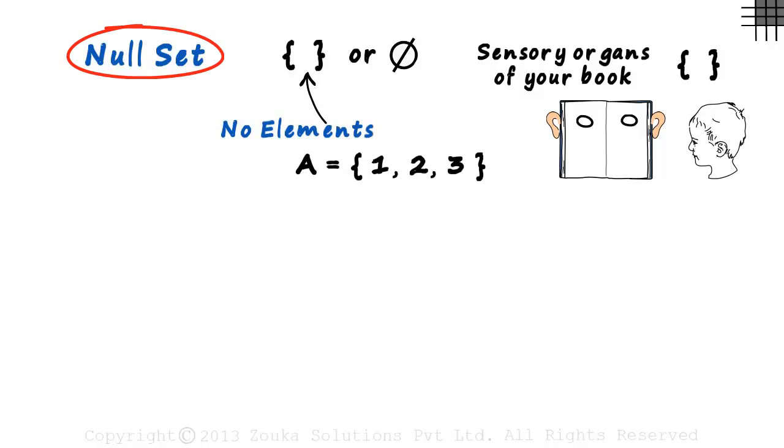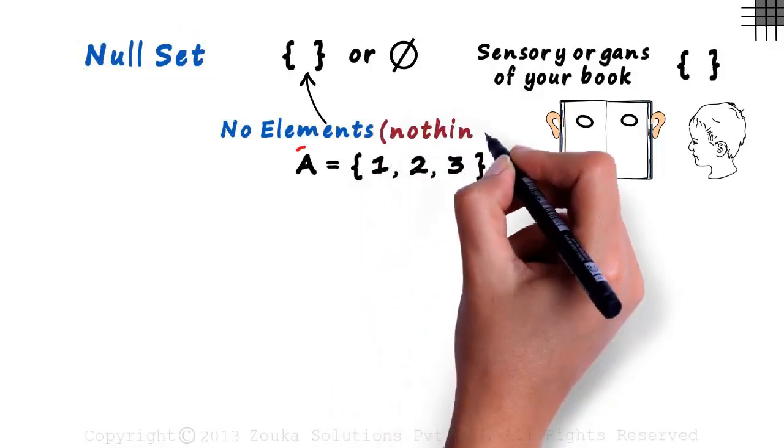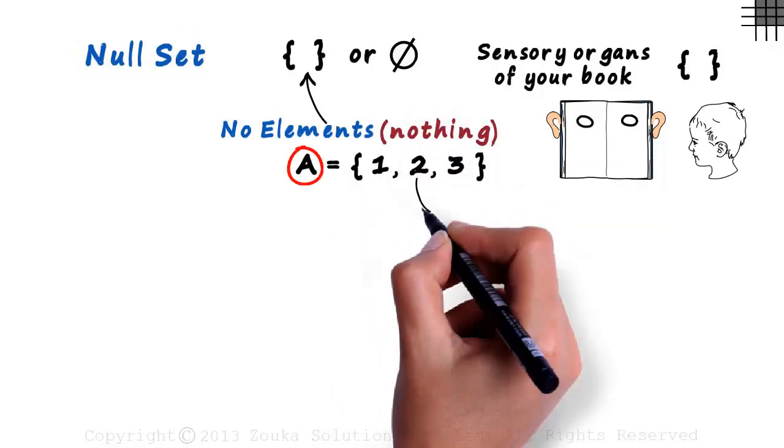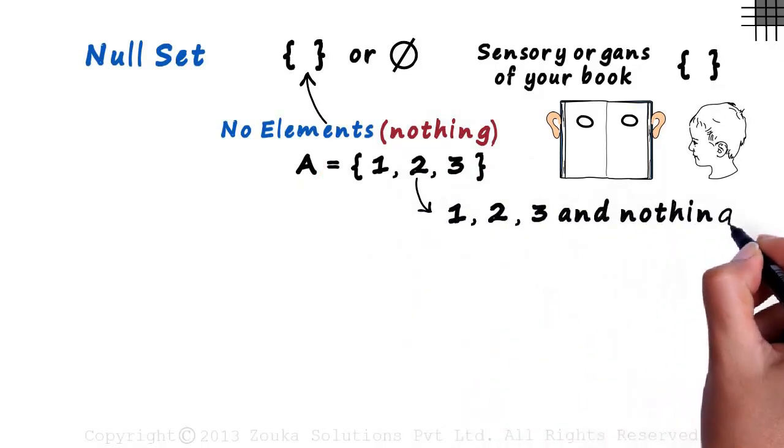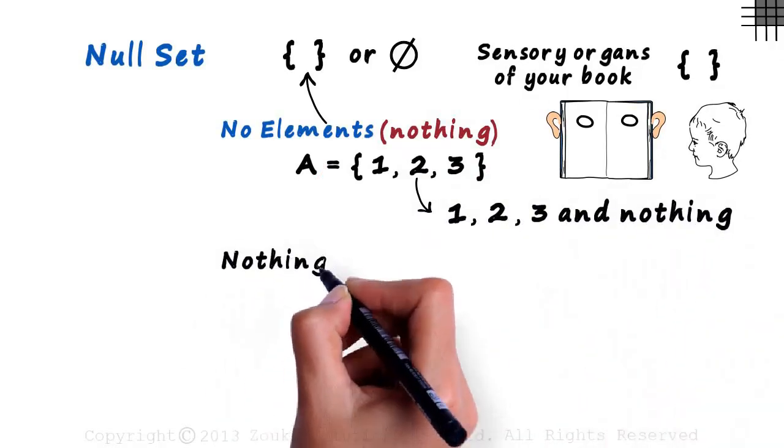What does the null set contain? Nothing. What does set A contain? It contains 1, 2, 3, and nothing. This means that nothing is a part of set A too.